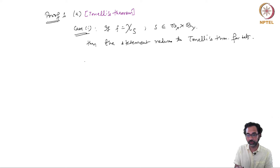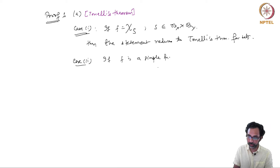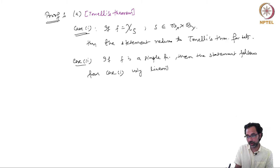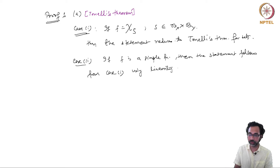The second case is when f is a simple function in the product space. Then the statement follows from Case 1 — Tonelli's theorem for sets — using linearity, because you will have finitely many terms in the simple function. So it is a finite linear combination of characteristic functions of measurable sets, and by linearity we get the result for simple functions.